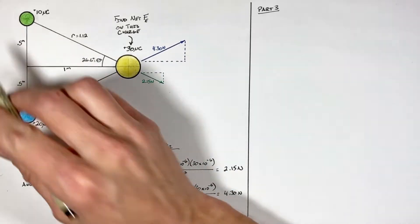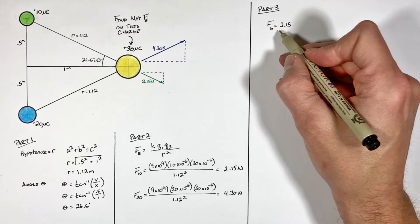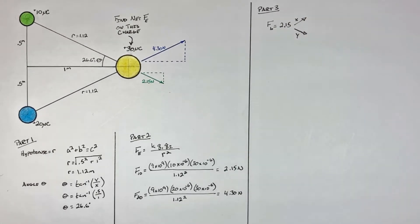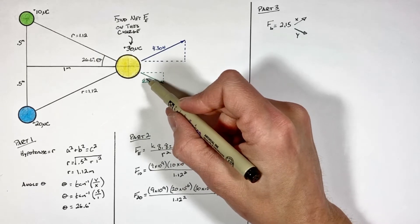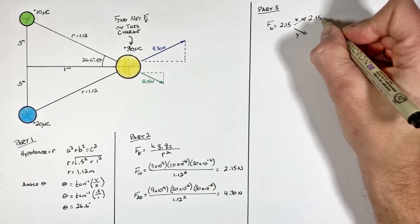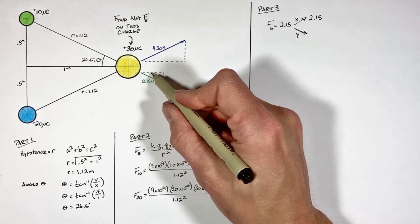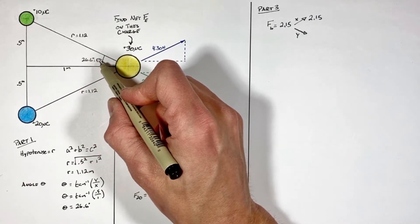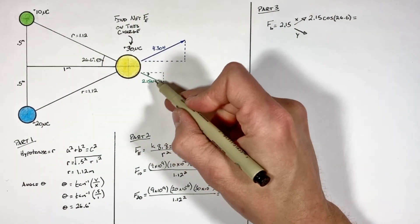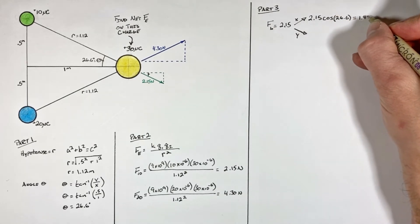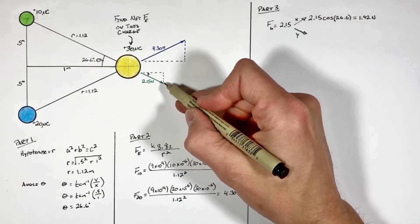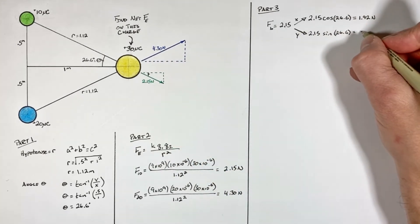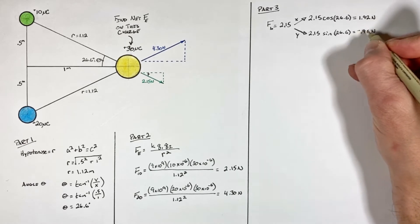Starting with the force produced by the first charge: we know this force is 2.15 newtons and it has both an x component and a y component. For the horizontal component we multiply 2.15 by the cosine of 26.6 degrees — that same angle from our triangle — which gives 1.92 newtons. Vertically we have 2.15 multiplied by the sine of 26.6 degrees, which gives 0.96 newtons, and that component is directed downward, so it's negative.